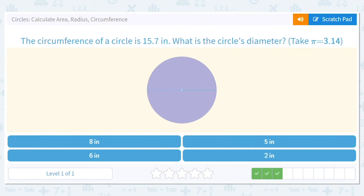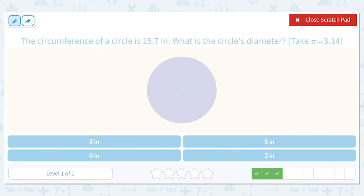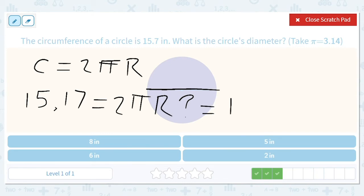The circumference of a circle is 15.7. What is the circle's diameter? Okay, so circumference equals 2πr, and we know that the circumference is 15.7.